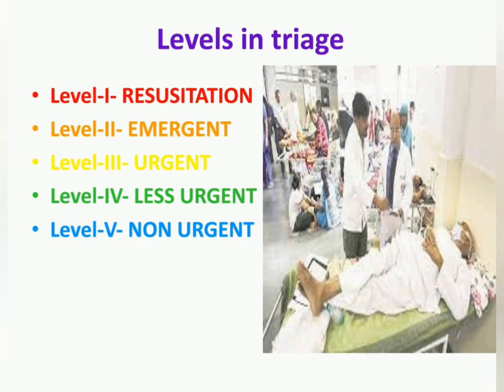In emergency department triage we have five levels. Level one is Resuscitation, coded red. Level two is Emergent, coded orange. Level three is Urgent, coded yellow. Level four is Less Urgent, and level five is Non-Urgent.